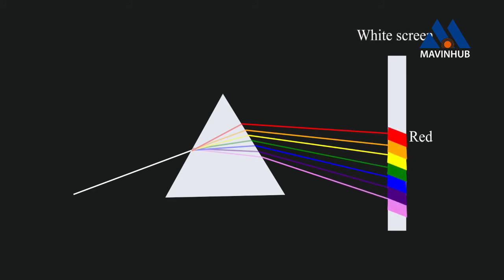These colors are red, orange, yellow, green, blue, indigo, and violet.